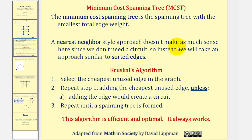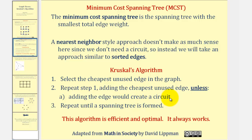A nearest neighbor style approach doesn't make much sense here since we don't need a circuit, so instead we'll take an approach similar to the sorted edges algorithm. The algorithm to find the minimum cost spanning tree is called Kruskal's algorithm. Step one: select the cheapest unused edge in the graph. Step two: repeat step one, adding the cheapest unused edge unless adding the edge would create a circuit — we don't want circuits in a spanning tree. Step three: repeat until a spanning tree is formed. Kruskal's algorithm is an efficient and optimal algorithm, which means it's easy to use and it always gives the minimum cost spanning tree.